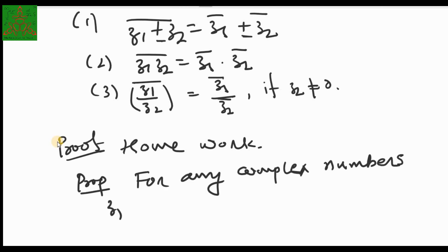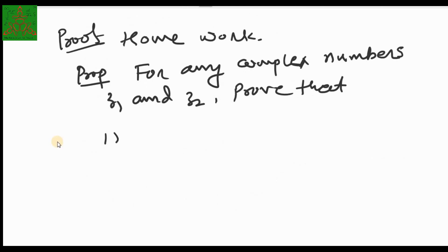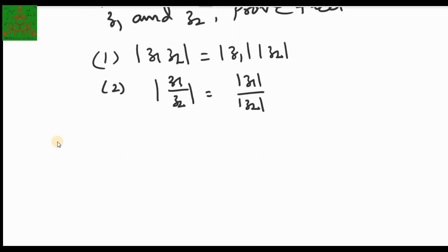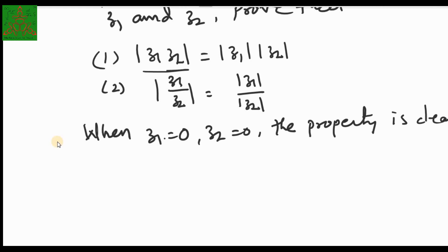The next property: for any complex numbers z₁ and z₂, (1) |z₁ · z₂| = |z₁| · |z₂| and (2) |z₁/z₂| = |z₁|/|z₂|. These are results about modulus but we will prove them using conjugates. When z₁ = 0 or z₂ = 0, the property is clear since both sides equal zero.